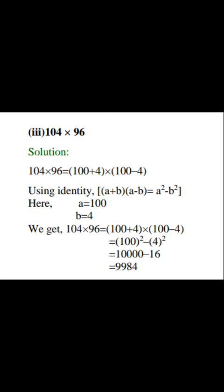Next question is 104 × 96. What did we do? 100+4 times 100-4, and identity will be (a+b)(a-b). A place will be 100 and B place will be 4, and I hope you know and you can verify this.